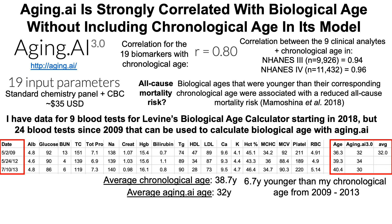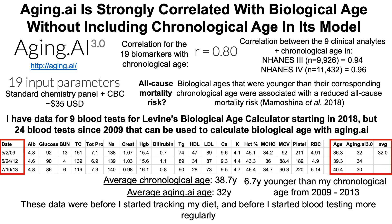That's not terrible, it's in the right direction. But for those who've watched my videos using Levine's phenotypic age calculator, I'm on average 12 years younger than my biological age for blood test data since 2018. So although the seven-year reduction for 2009 to 2013 is good, it's not as good as I can do. Let's take a look at that data.